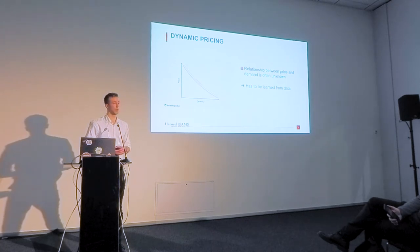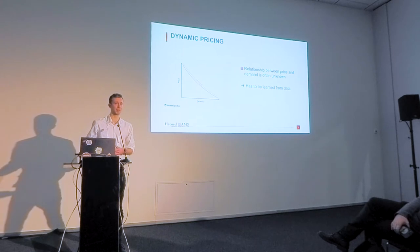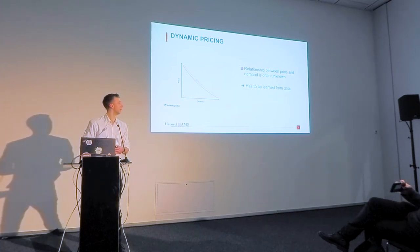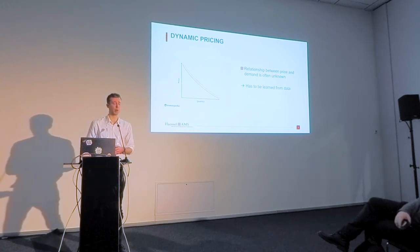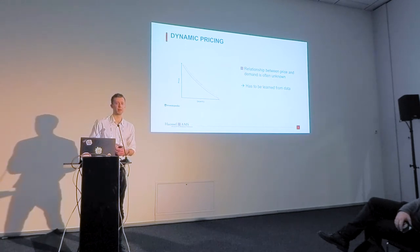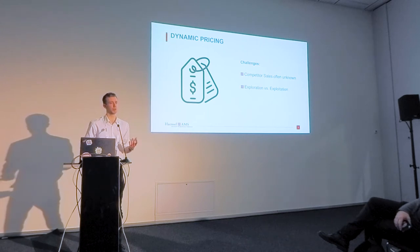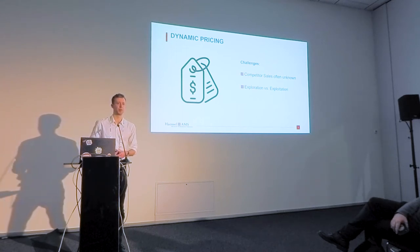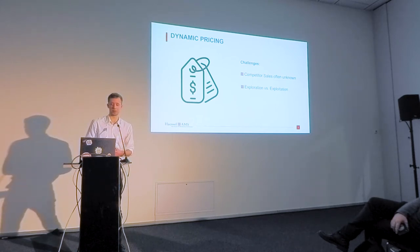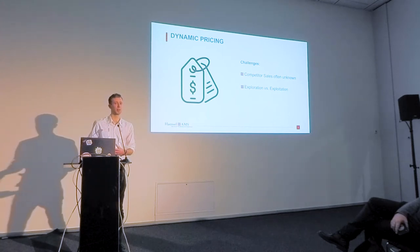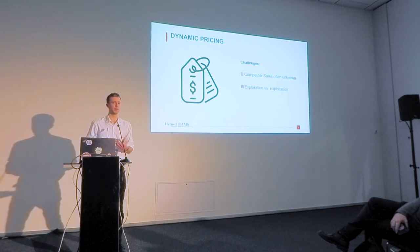Most of you know this basic economic function of price plotted against quantity. In general, quantity decreases with price — so if you have higher pricing, sales or quantity is lower, unless we're talking about luxury goods, but that's a different topic. How do you estimate the relationship between price and demand? This has to be learned from data. This brings us to one of the key challenges, which is the trade-off between exploration — trying different price strategies and gathering data from different approaches — versus exploitation, which is really using the price strategy to generate revenue and optimize your KPIs. Another challenge is that competitor sales are often unknown. It's relatively easy to observe the prices your competitors are charging, but their sales numbers are often unknown.